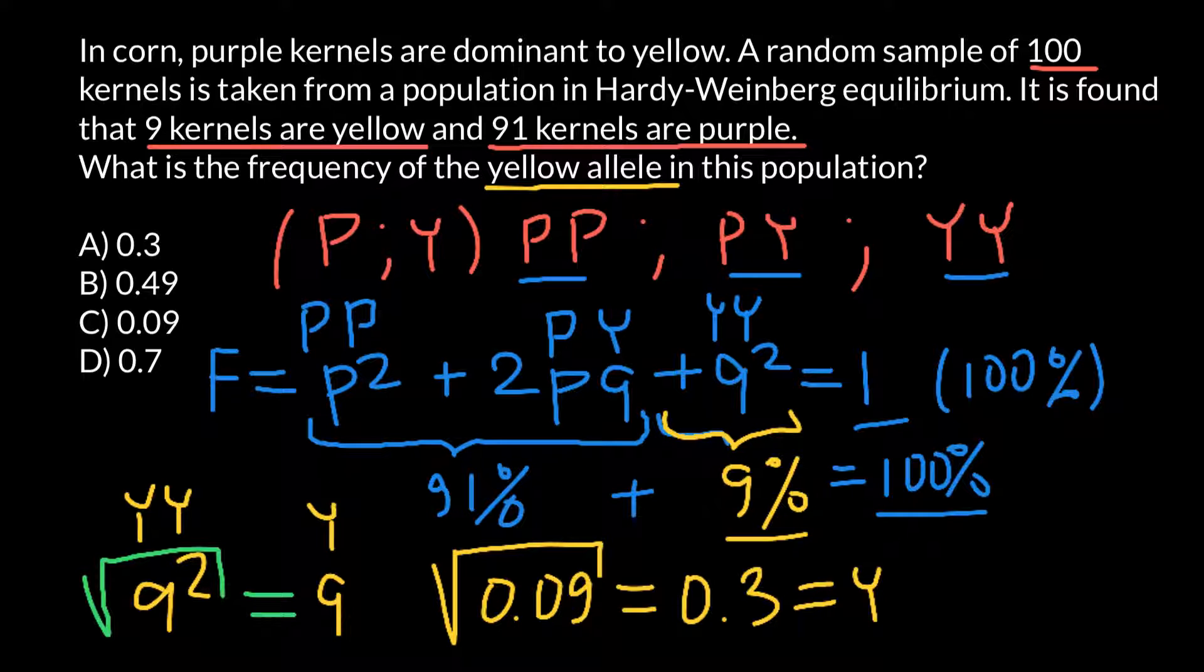We also can find the frequency of the P allele. If frequency of the Y allele is 0.3, then frequency of the P allele would be 0.7, because these two alleles would give us 1 or 100%. So as you see, the correct answer would be answer A.